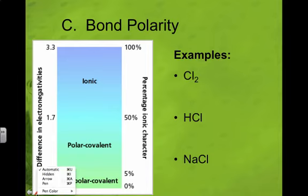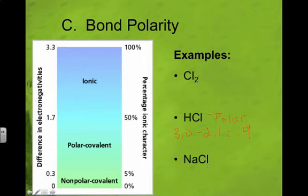So 2.1 and 3.0. So let's just take 3.0 minus 2.1. We're going to get 0.9. So this is higher than 0.5. So we're going to say this is polar covalent.